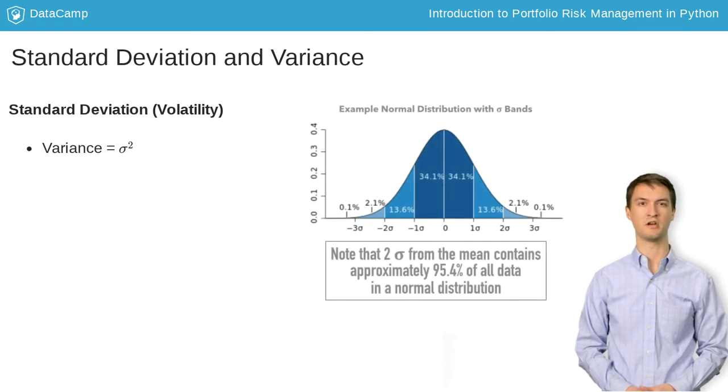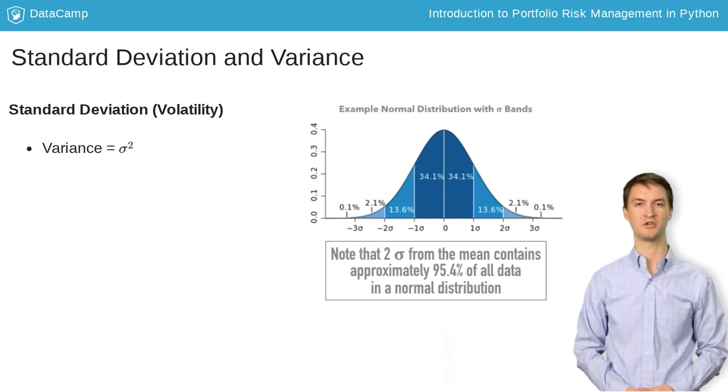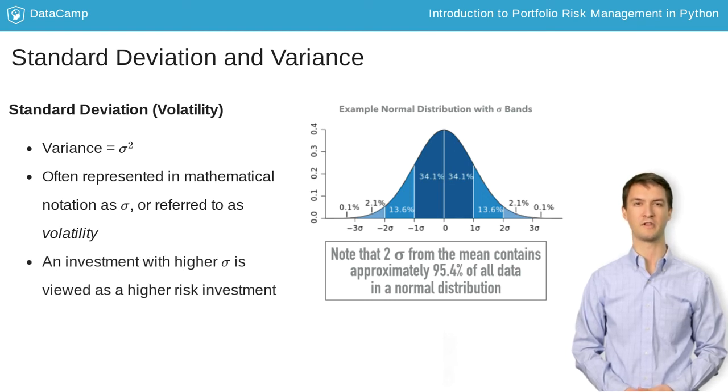The second moment of the distribution is variance, which is the square of the standard deviation or volatility. Volatility is one of the most important concepts for risk management in finance. Some traders simply refer to it as vol for short. The fundamental takeaway is simple. An investment with higher volatility is viewed as a higher risk investment. Volatility is just another measure of the dispersion of returns, just like variance.